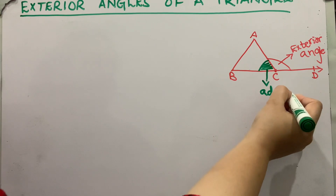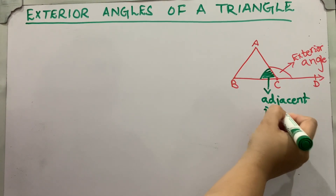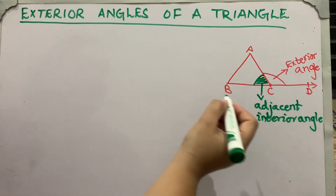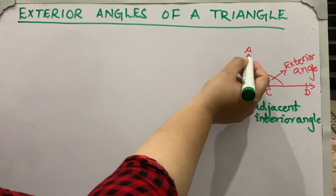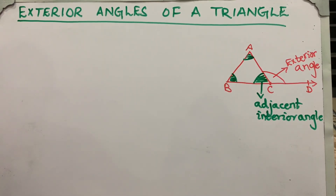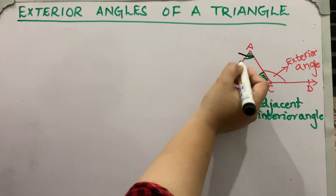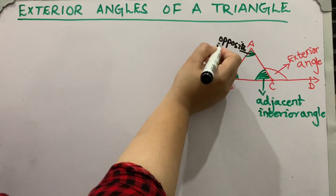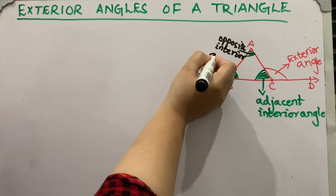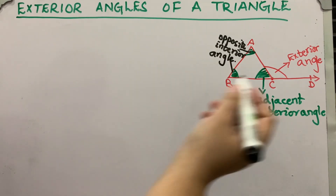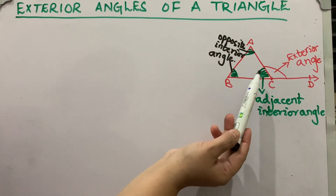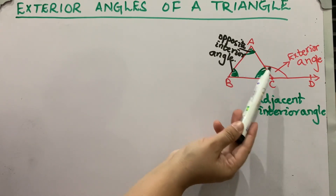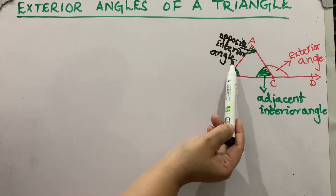The angle adjacent to the exterior angle is called the adjacent interior angle. The two angles which are opposite to the exterior angle are called opposite interior angles.